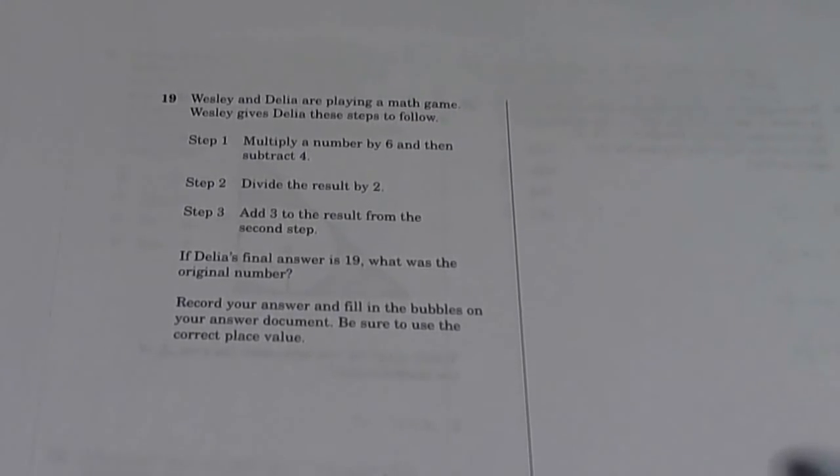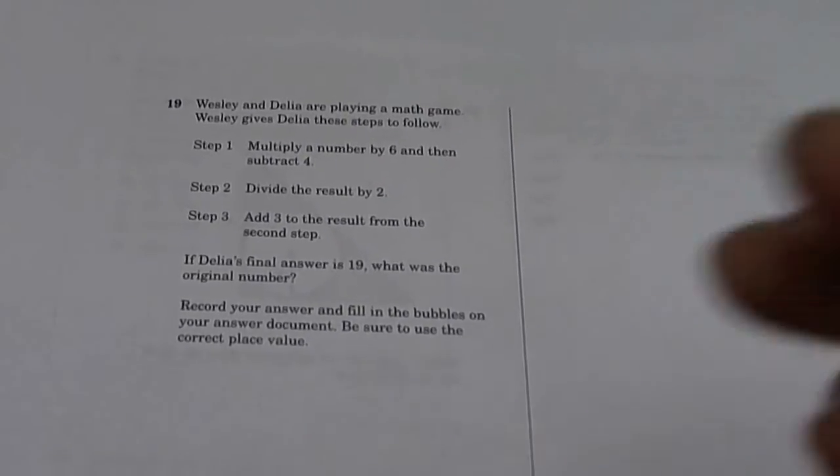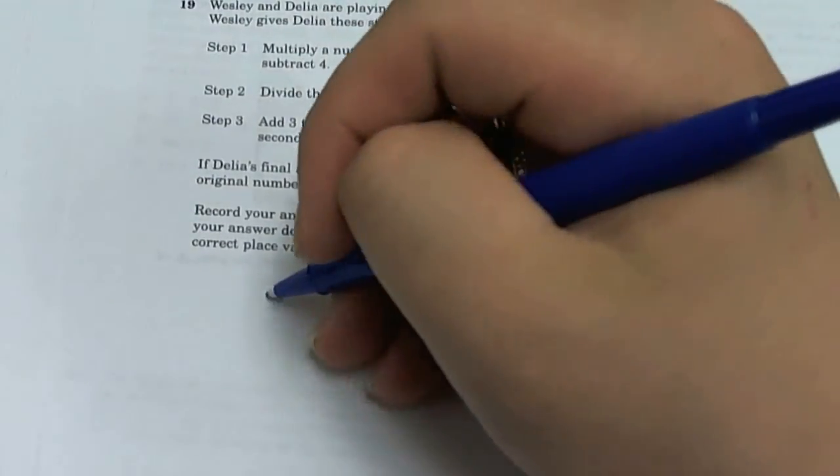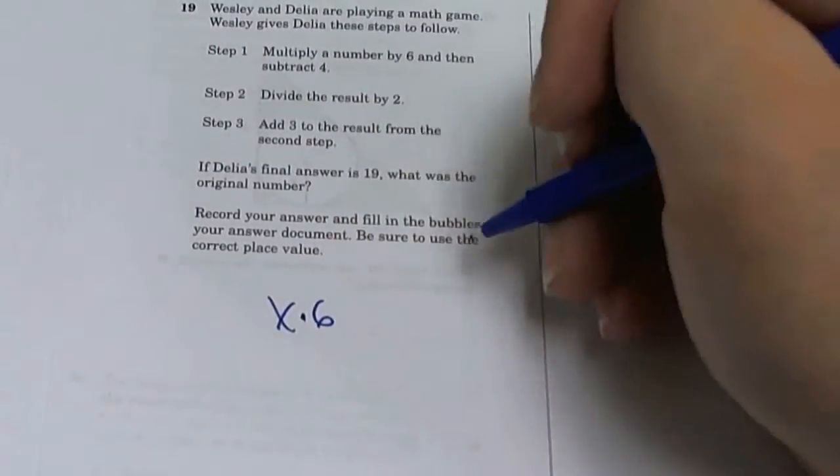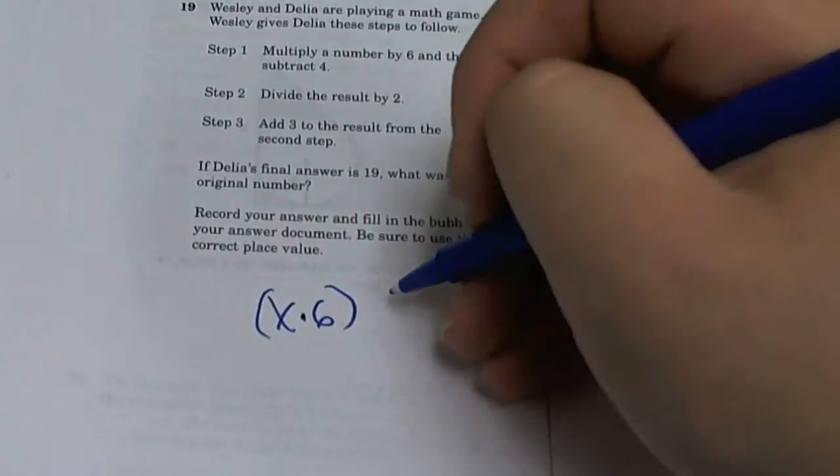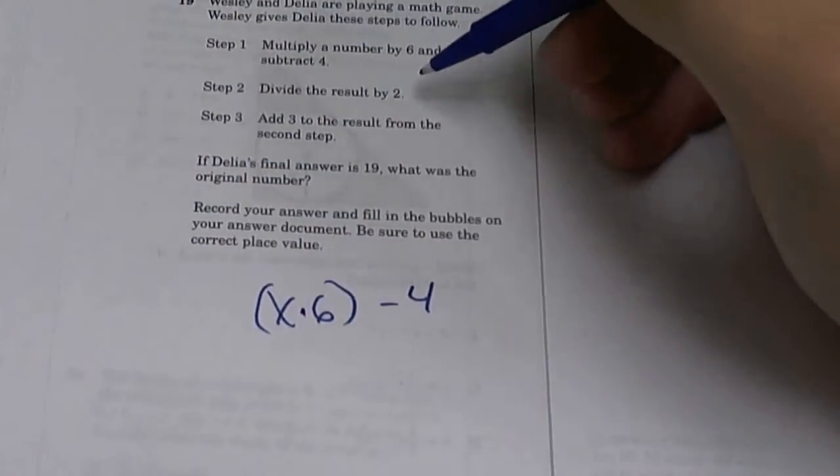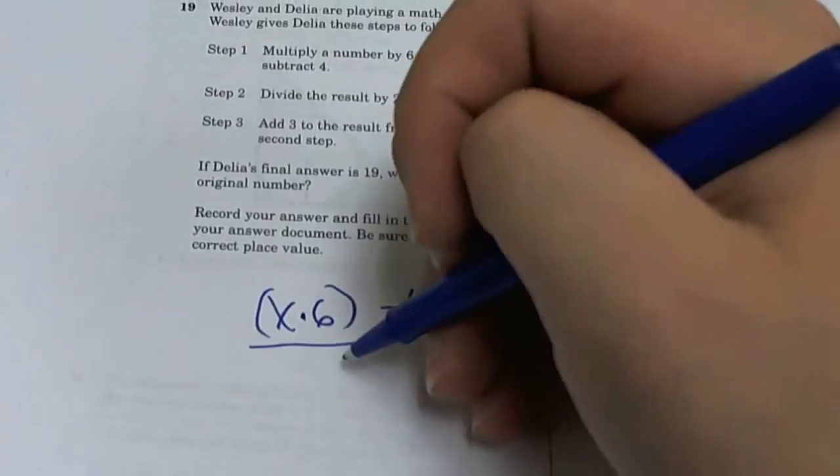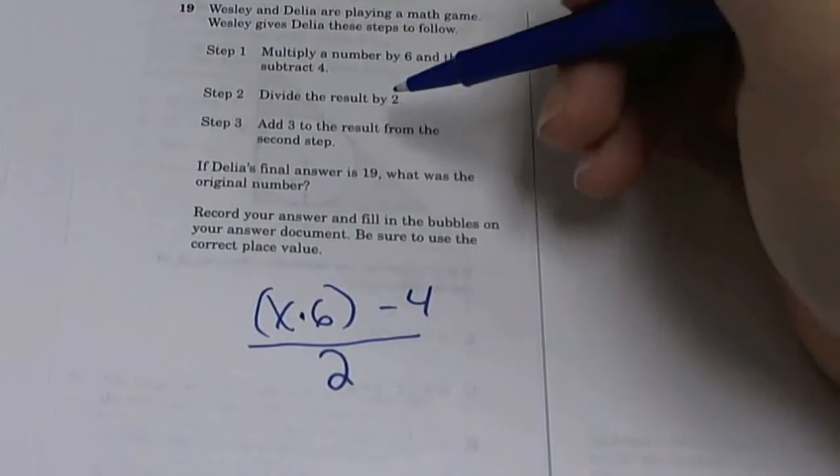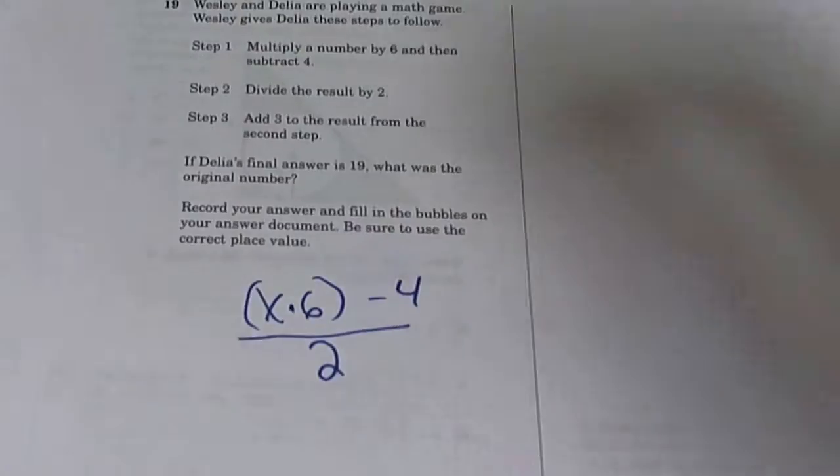Weasley and Daly are playing a math game. Weasley gives us these steps to follow. This question we have to follow these steps exactly. It says a number - a number we're always going to say it's X. So multiply a number X by 6, and then subtract 4. Divide the result by negative 2, so you divide everything by negative 2 because this is the result. Add 3 to the result of step 2, so you got to add 3 to all this.